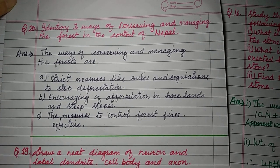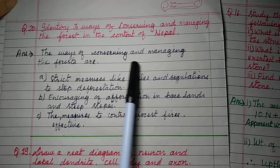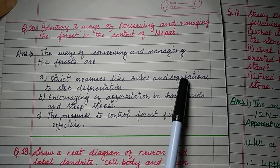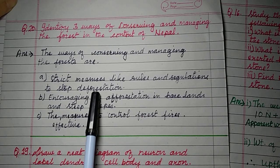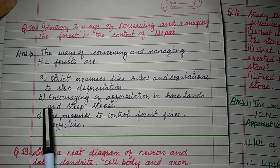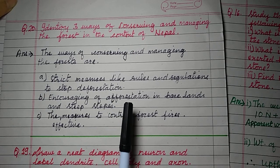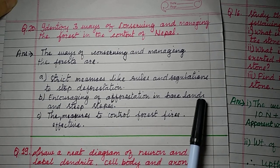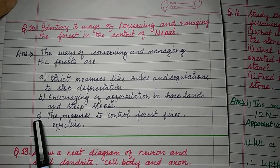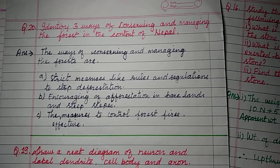Question number 20: identify three ways of conserving and managing the forest in the context of Nepal. (a) Implement strict rules and regulations to stop deforestation. (b) Encourage afforestation in bare lands and steep slopes — planting trees and saplings, and terrace farming. (c) Implement effective measures to control forest fires, which cause large-scale loss of forest.